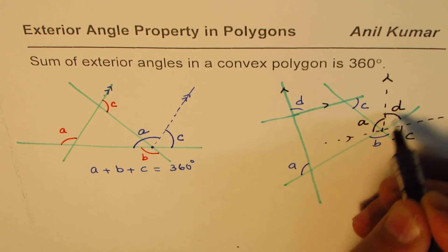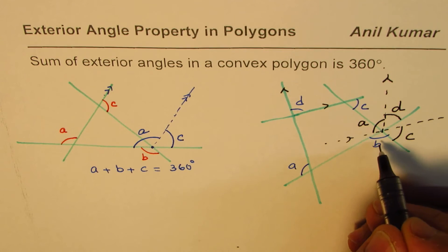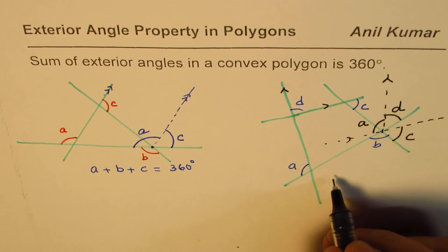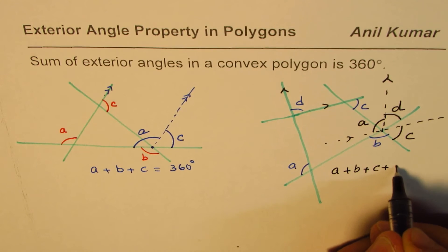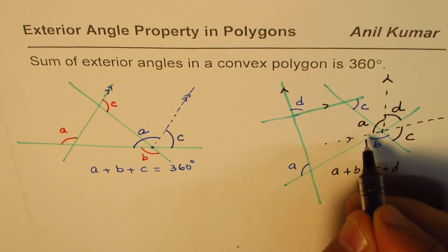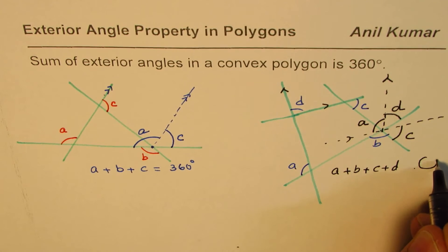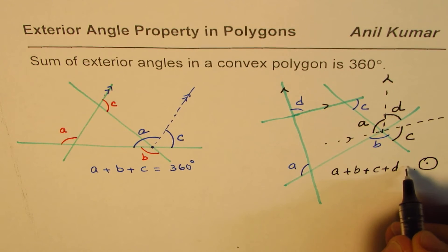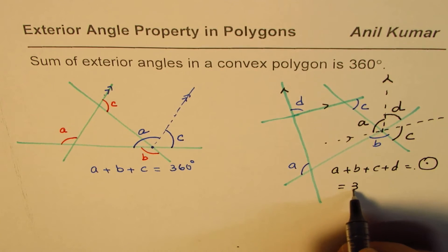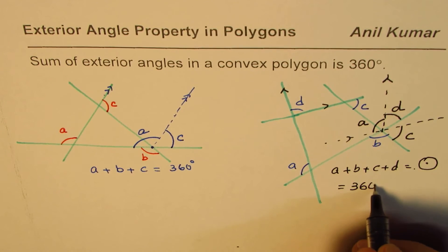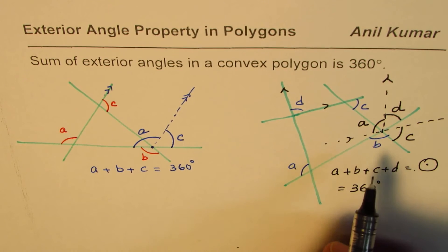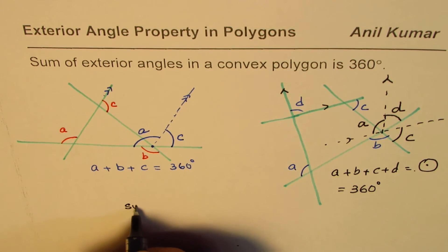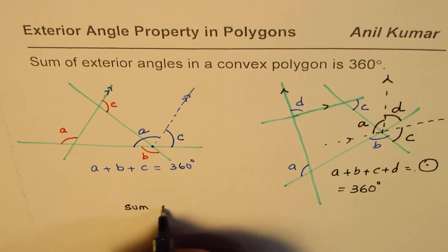As you can see, the combination of A, B, C, D — A plus B plus C plus D — is one full circle, which is 360 degrees. So for any convex polygon, the sum of exterior angles is always 360 degrees.